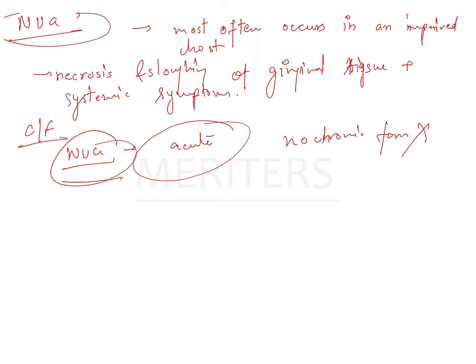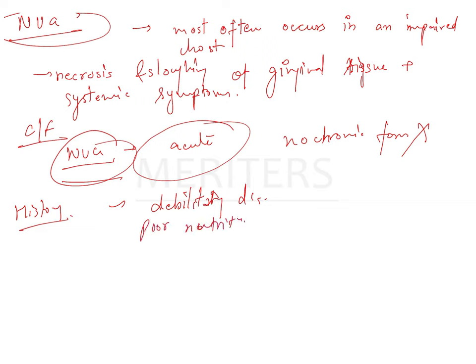The history is characterized by a sudden onset of symptoms, sometimes occurring after an episode of debilitating disease or acute respiratory tract infection. Other contributing factors include a change in living habits, protracted work without adequate rest, poor nutrition, tobacco use, and psychological stress — these are common features in the patient's history.